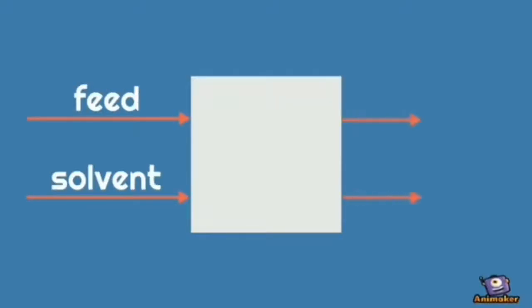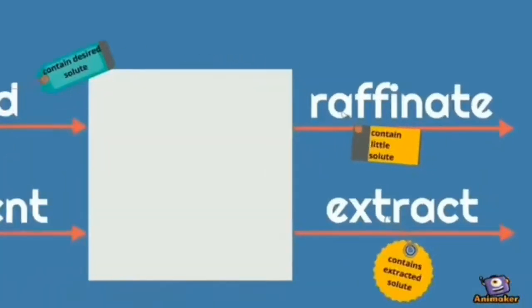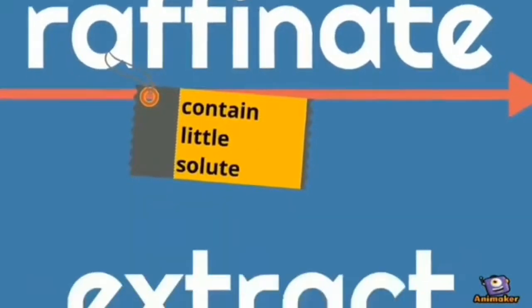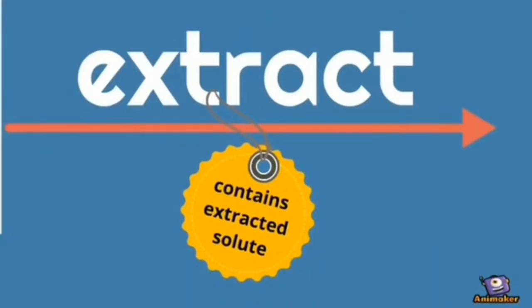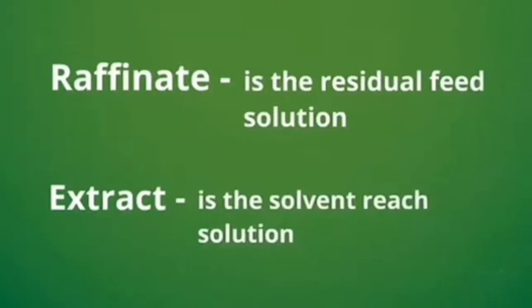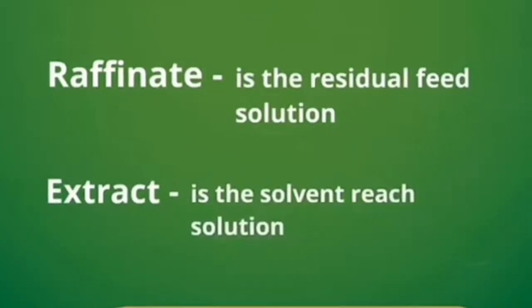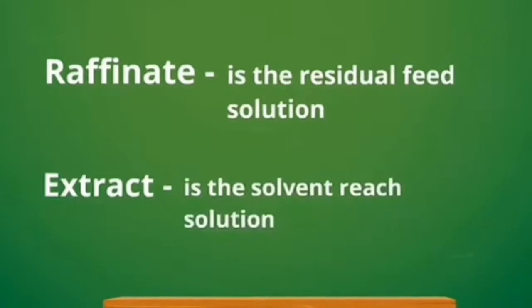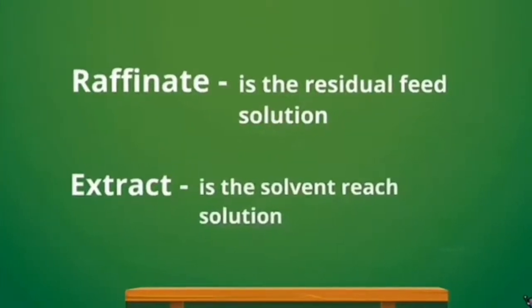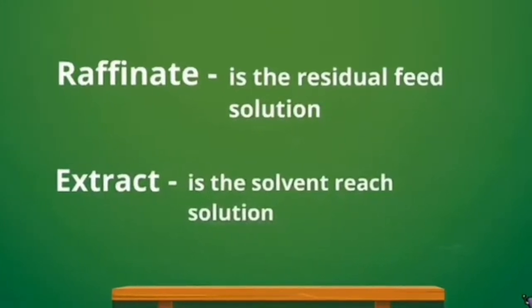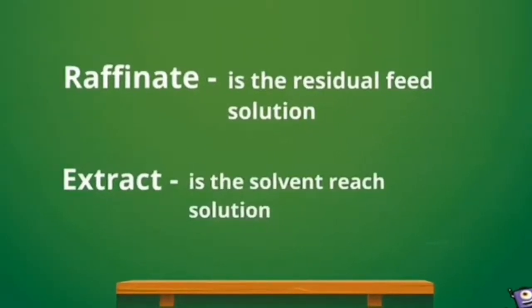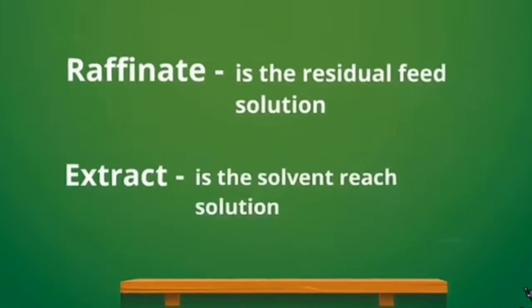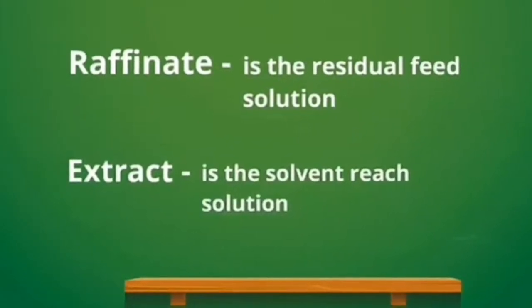It is important that we know the meaning of each stream. For example, the feed contains the desired solute, and the raffinate contains little solute due to the solute being extracted, and the extract contains the extracted solute. Raffinate is a residual feed solution, and the extract is the solvent-rich solution. In simpler terms, the feed becomes the raffinate once the solute has been extracted from it. The extract is formed when the solute has been transferred to the solvent, and it becomes the exit stream from the process.